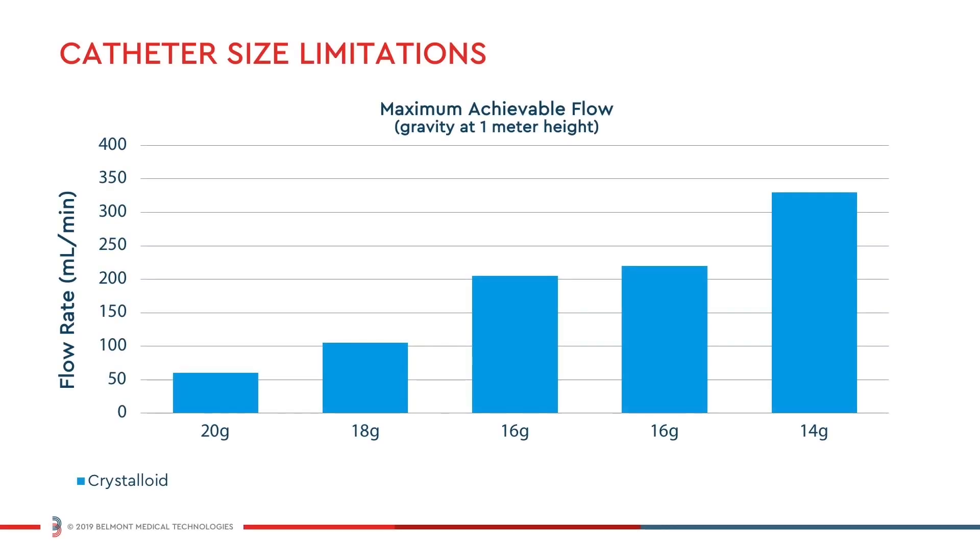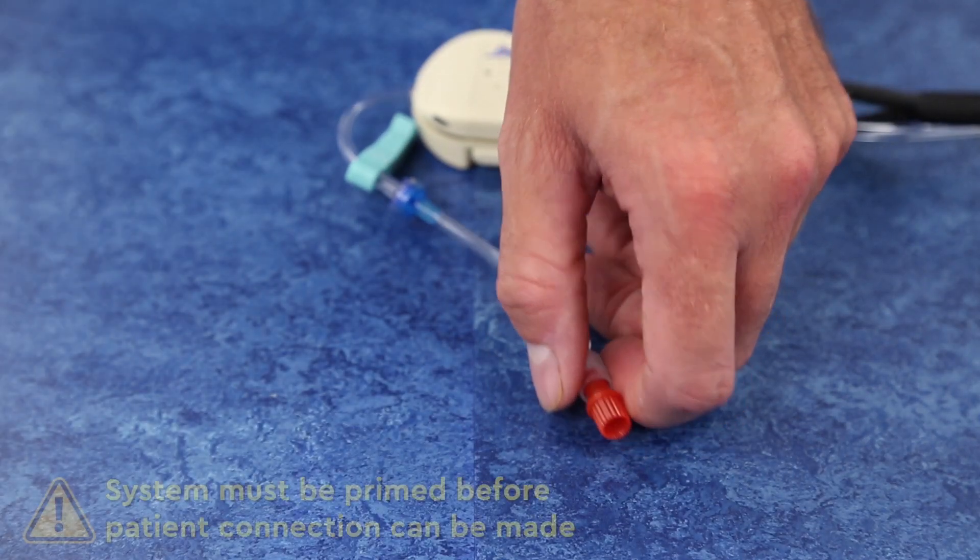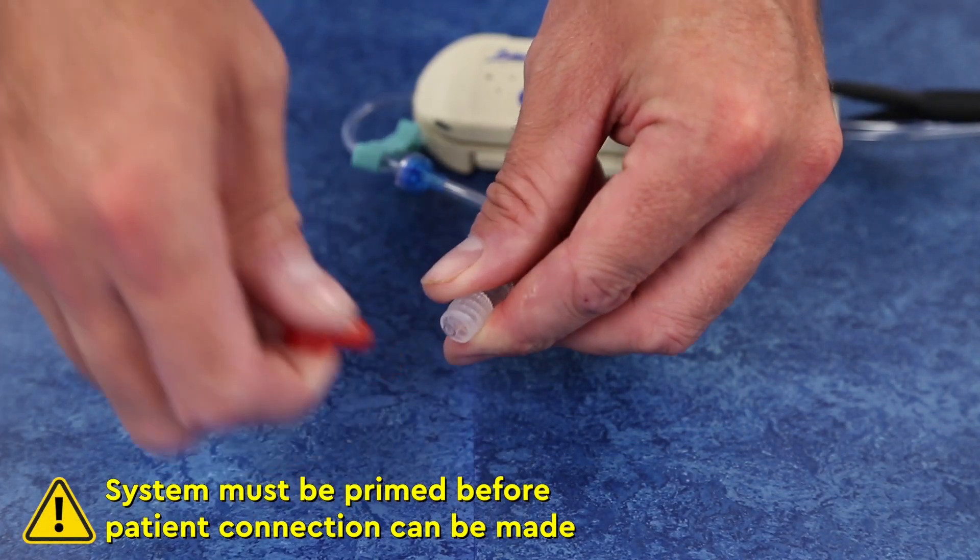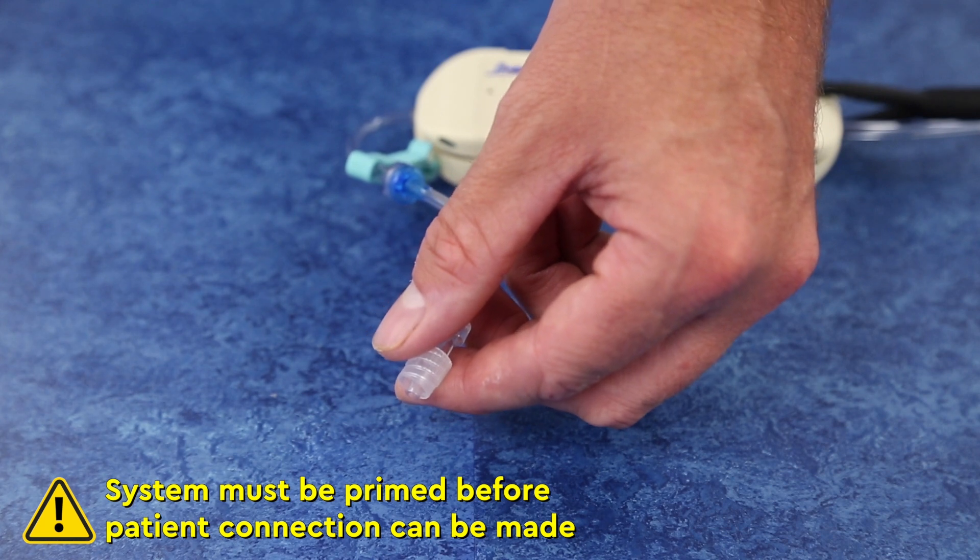To begin operation, first select the appropriate catheter size for the intended flow rate. Using aseptic technique, disconnect the red lure cap and connect the buddy disposable to the patient's catheter.